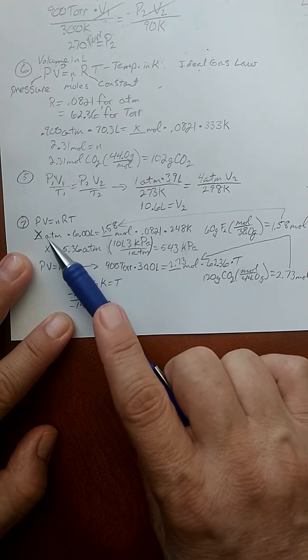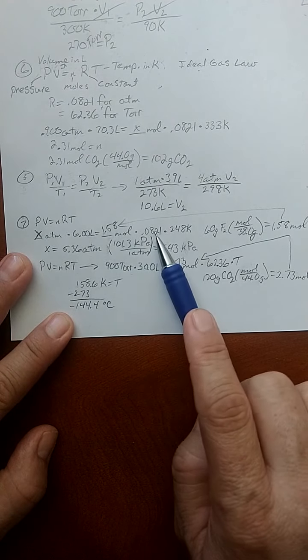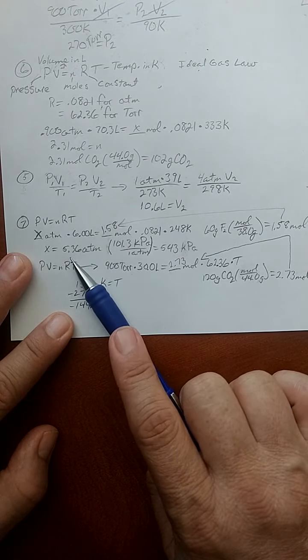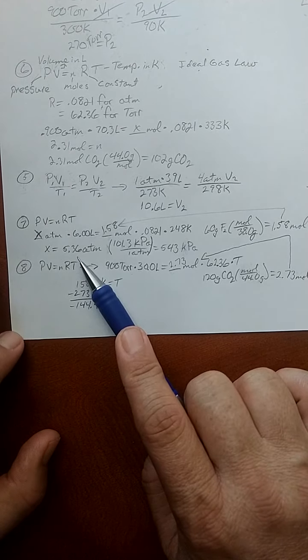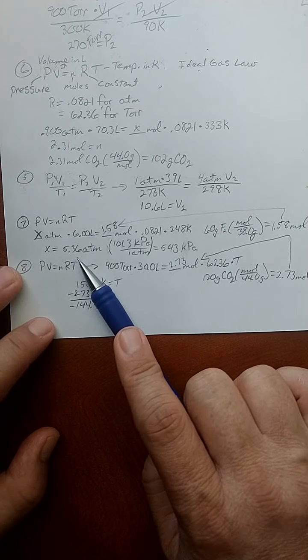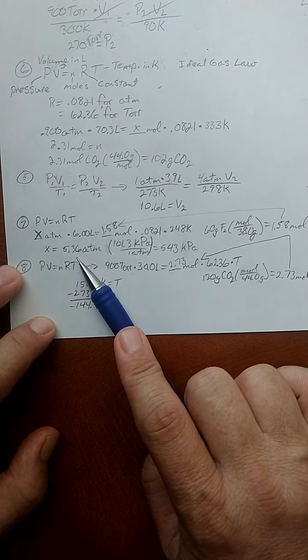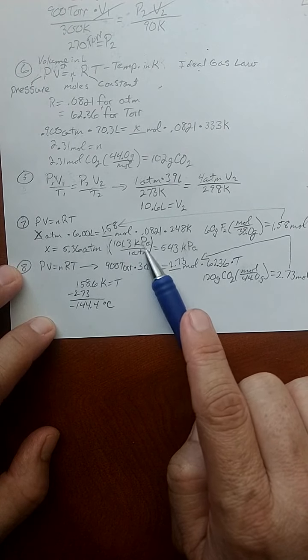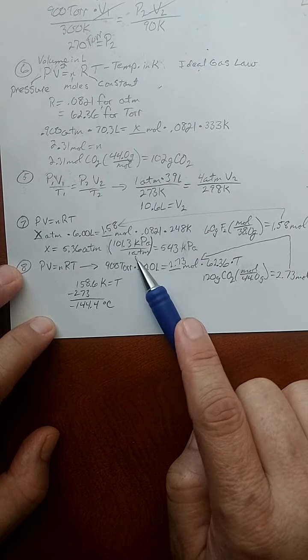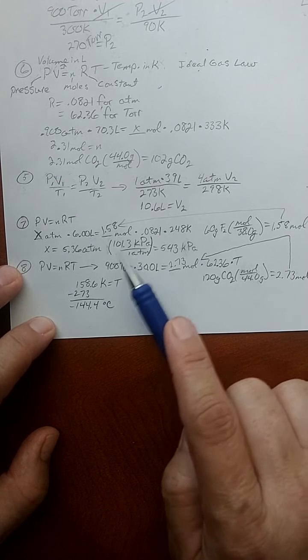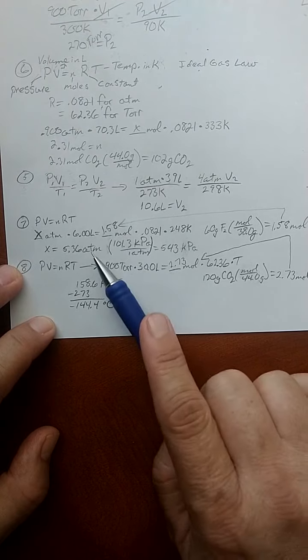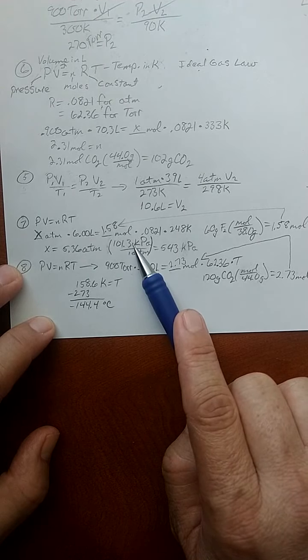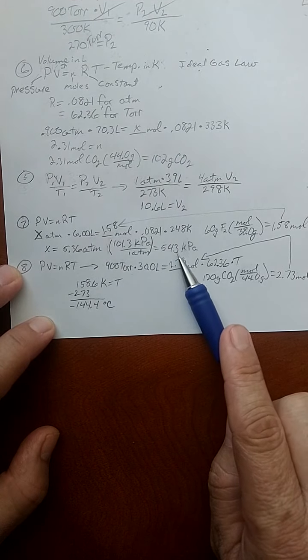And now I can solve for pressure. And 1.58 times 0.0821 times 248 divided by 6 is 5.36 atmospheres. Except, being giant nerds, they asked for kilopascals. Okay. Well, I think way back in the previous video, I said that there are 101.3 kilopascals per every one atmosphere. So if I put my ratio this way, the atmospheres will cancel out. And I'll multiply 5.36 times 101.3. And I'll get 543 kilopascals.